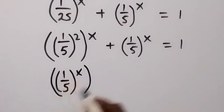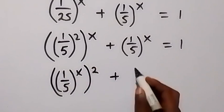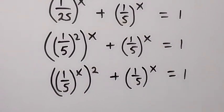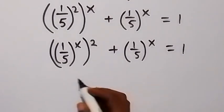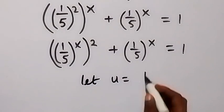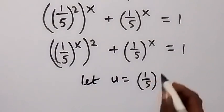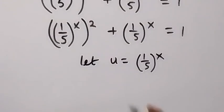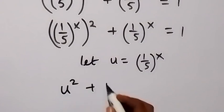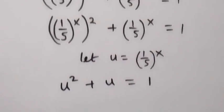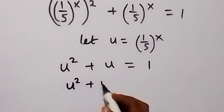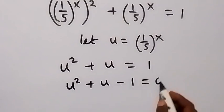Here we have 1 over 5 common, so let a letter represent that. Let u be equal to (1 over 5) raised to the power x. In terms of u we have u squared plus u equals 1. We can take this one to the other side to form a quadratic equation: u squared plus u minus 1 equals 0.